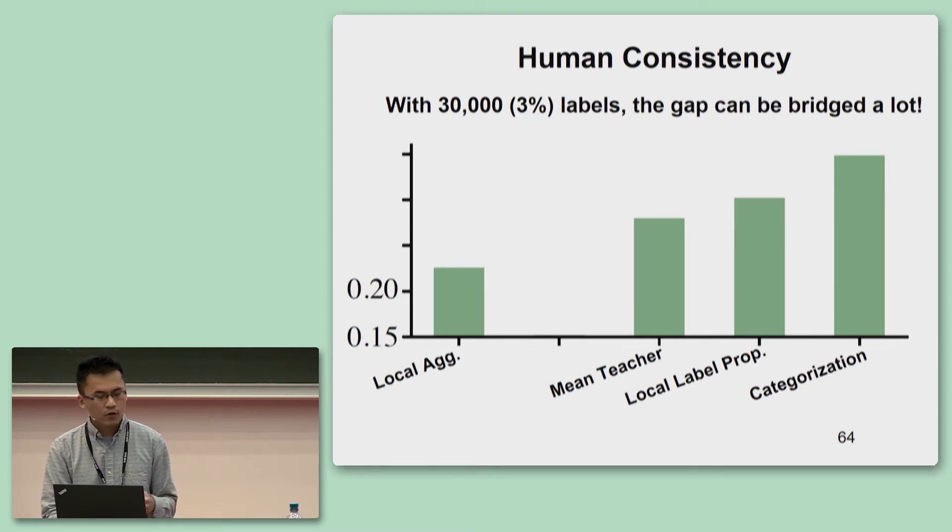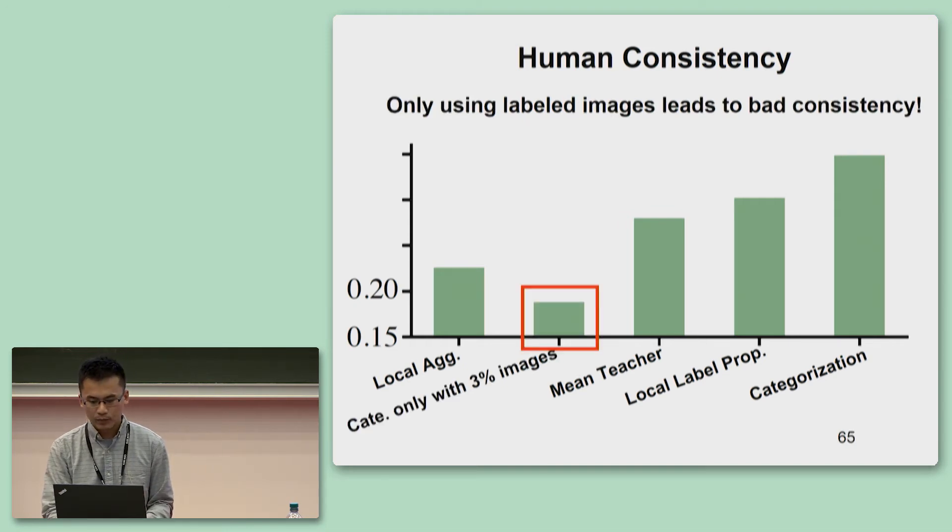Both of these two networks successfully improve the behavior similarity of the self-supervised network, significantly bridging the gap to the supervised network, which uses 1.2 million labels. As another baseline, if we only allow the categorization task to have 3% labeled images, it can only achieve a very low behavior consistency. This comparison supports the effectiveness of the semi-supervised learning tasks in using the unlabeled images.